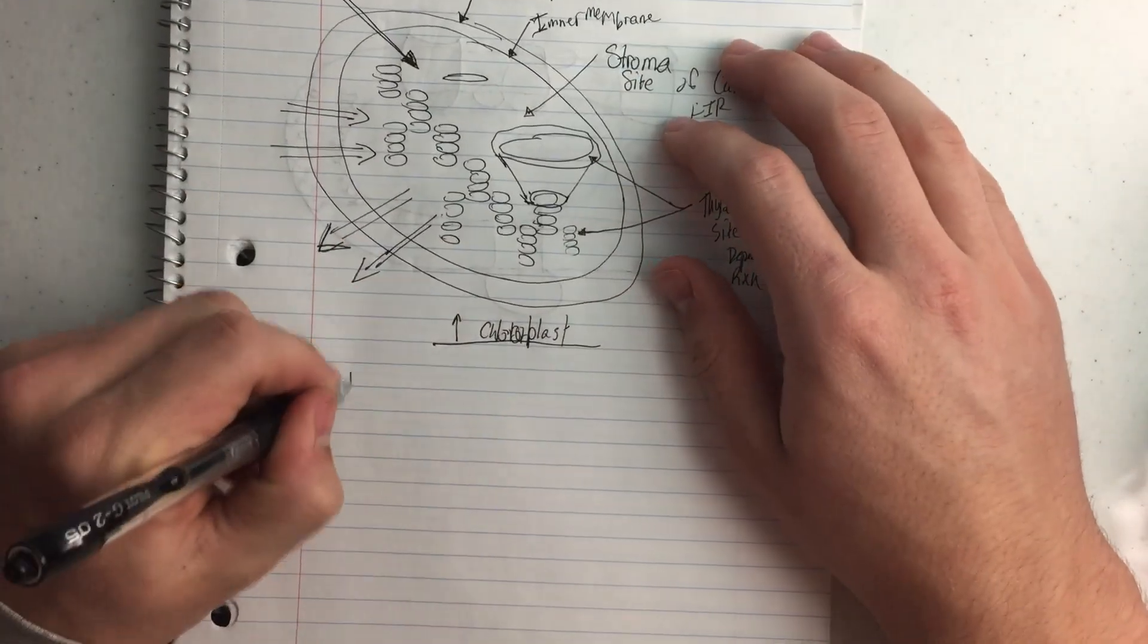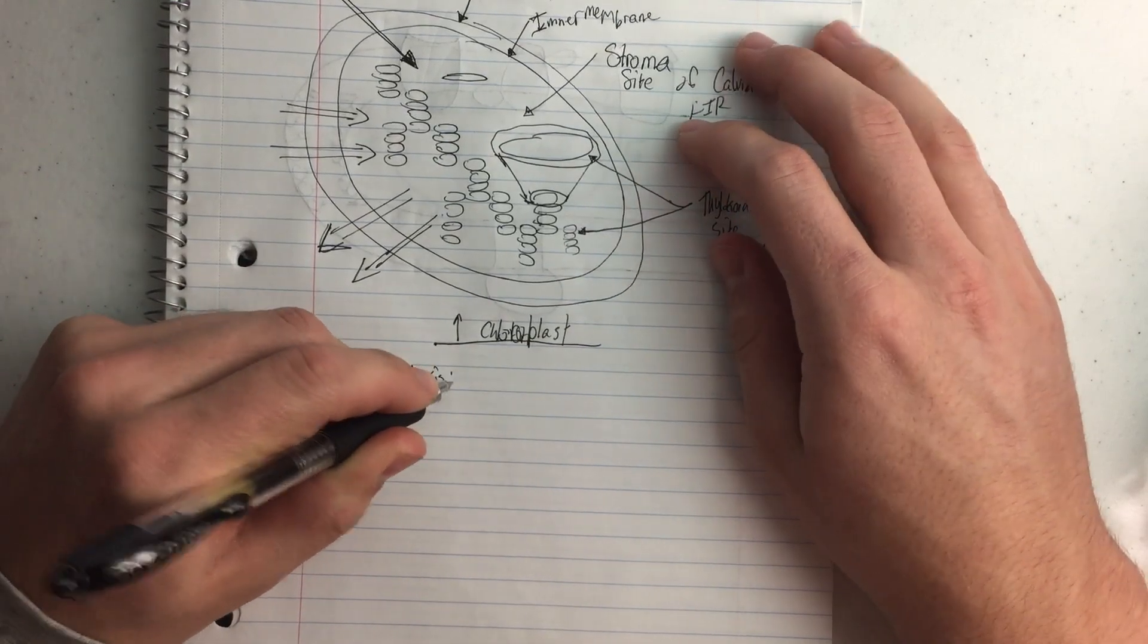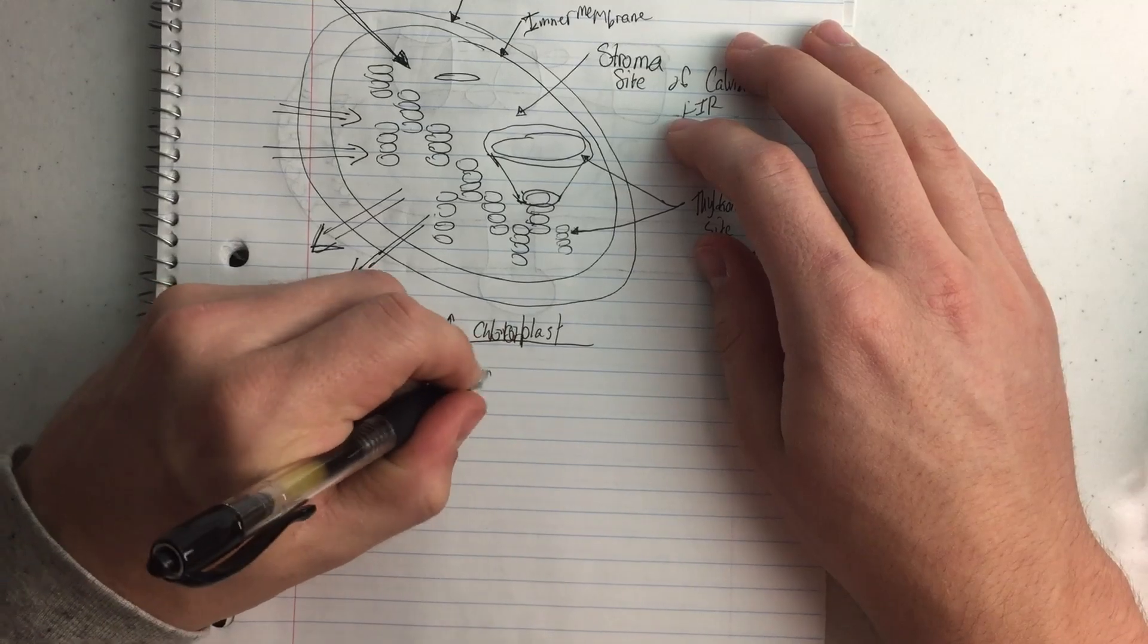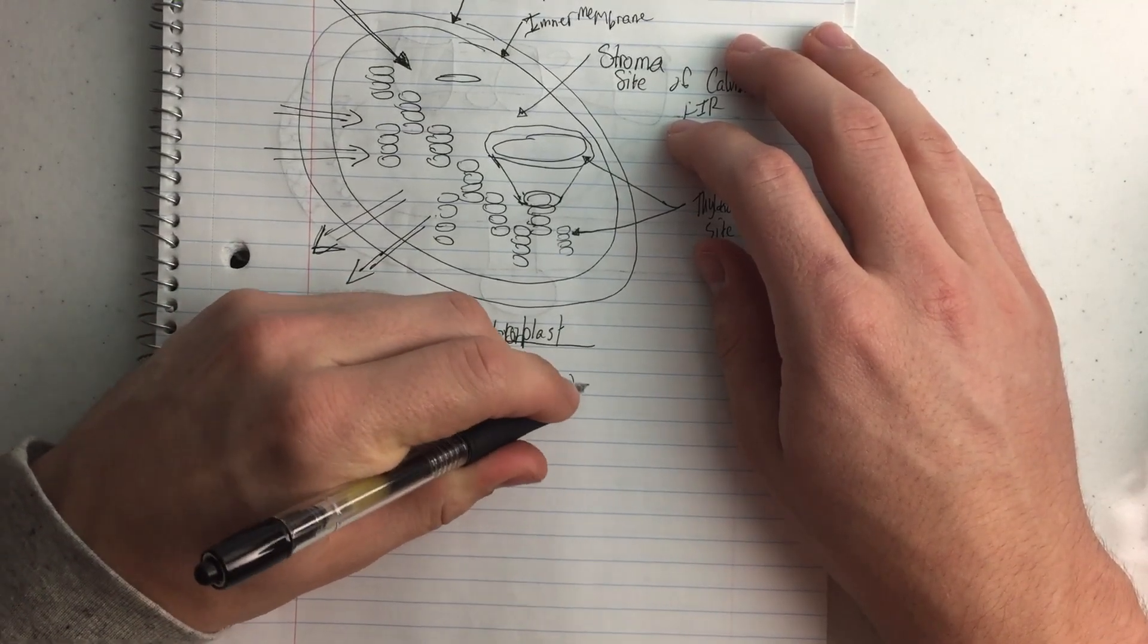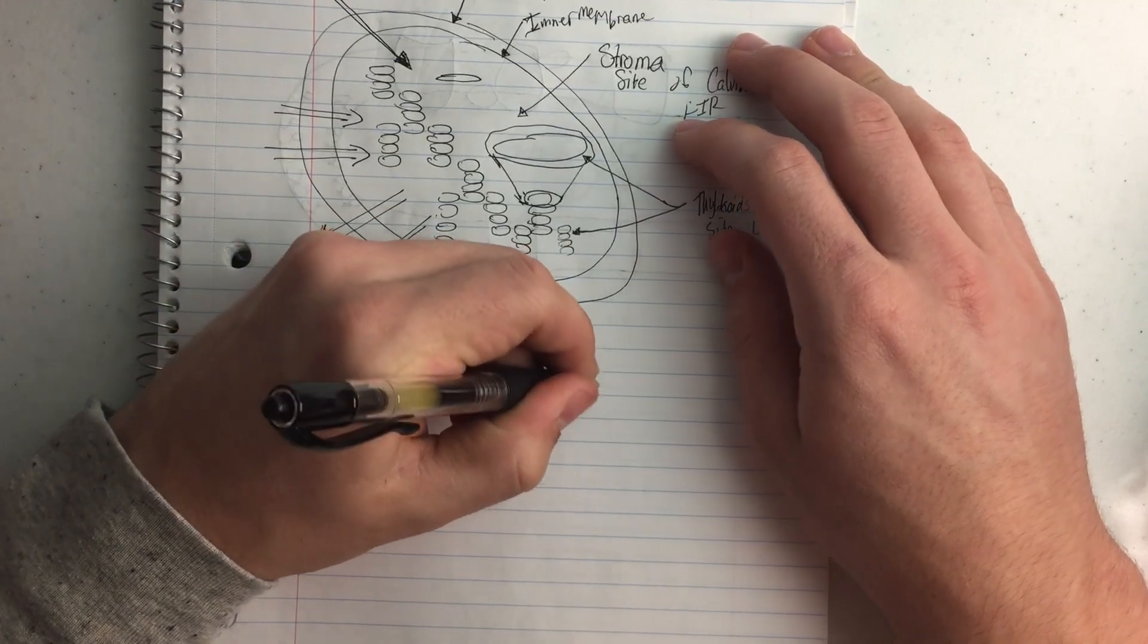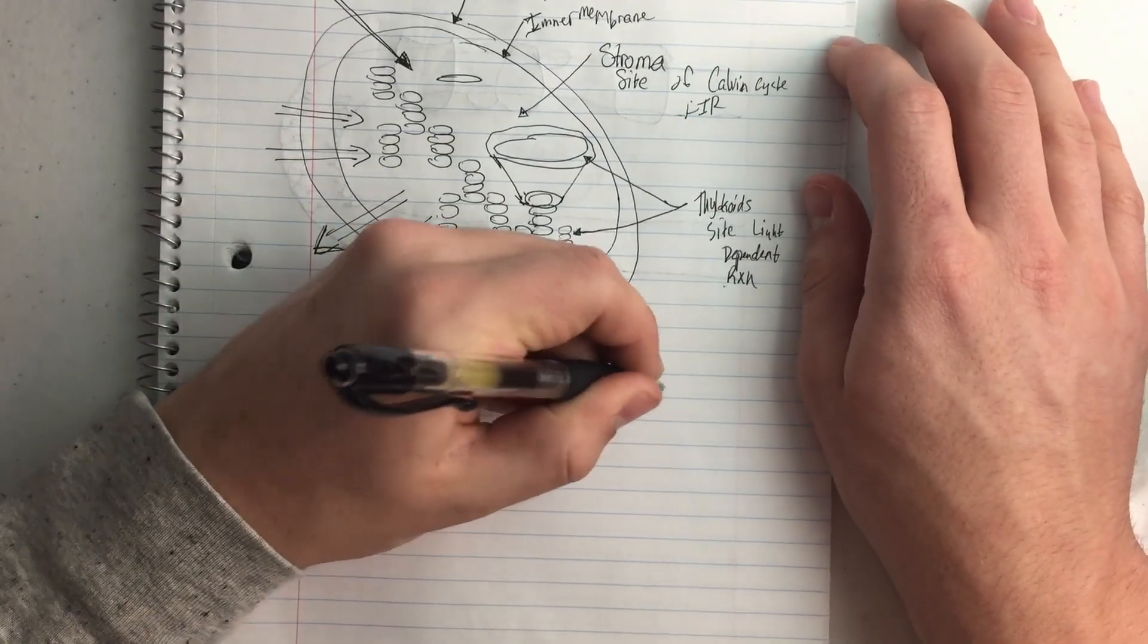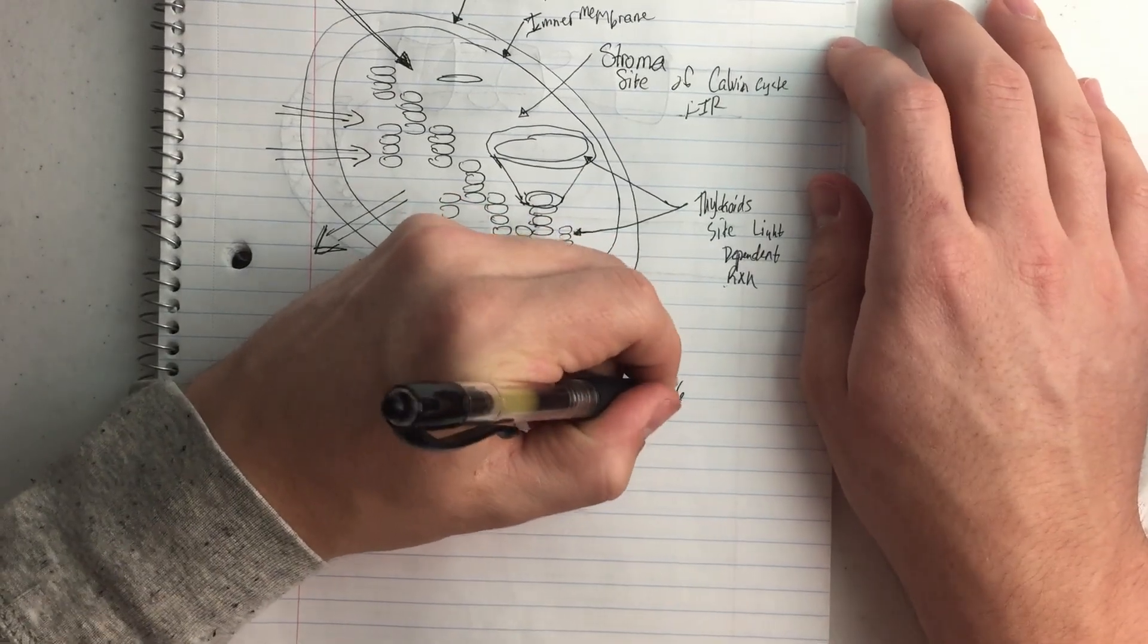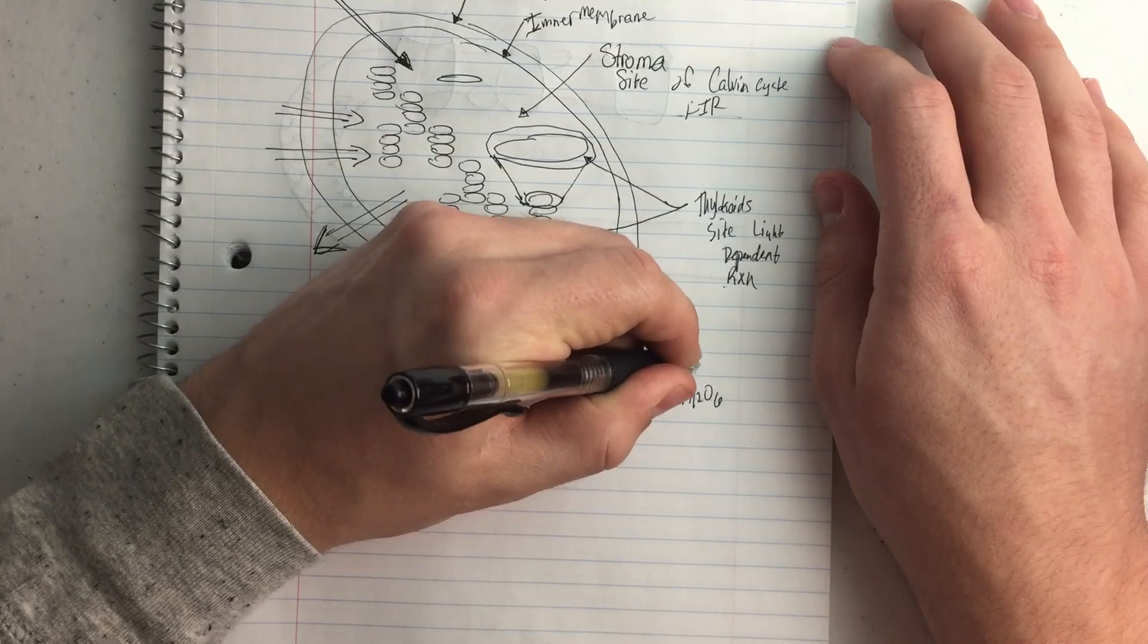So I want to remind you that photosynthesis is this reaction right here: 6CO2 plus 12H2O plus sunlight gives us C6H12O6, or glucose, most of the time.